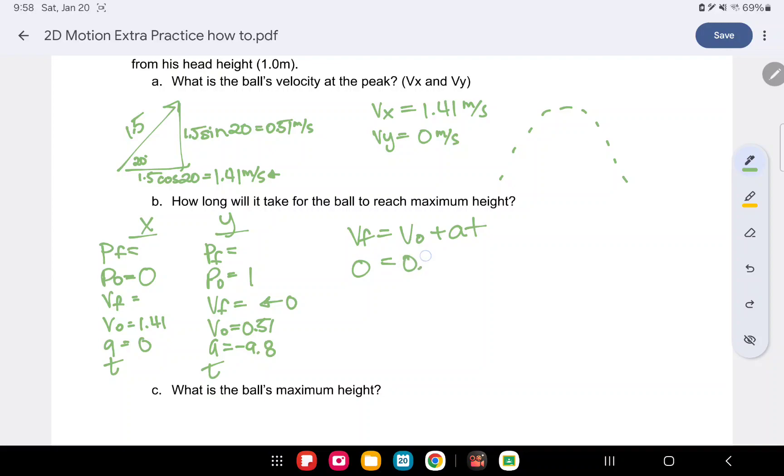Our initial velocity is 0.51. And gravity, negative 9.8 times time. So we put this over here. We're left with this. Divide by 9.8 on both sides. And we're left with a time for how long it will take for the ball to reach maximum height of 0.052 seconds. So it's very short.